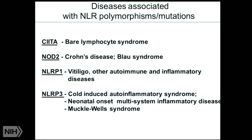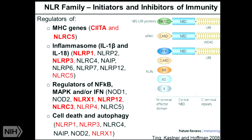One of the reasons we're so interested in this family is because they're linked to human diseases. C2TA is linked to bare lymphocyte syndrome — the lack of Class II MHC expression. NOD2 has been shown to be one of the most important genetic linkages to Crohn's disease and also to a rheumatologic disease called Blau syndrome. NLRP1 is linked to a skin disease and a variety of autoimmune diseases. And of course the big one is NLRP3, which I'll tell you a lot more about.